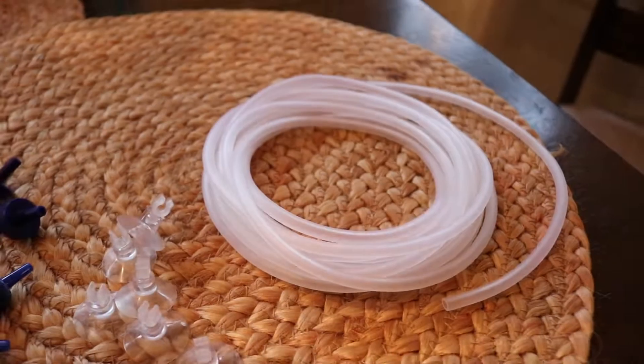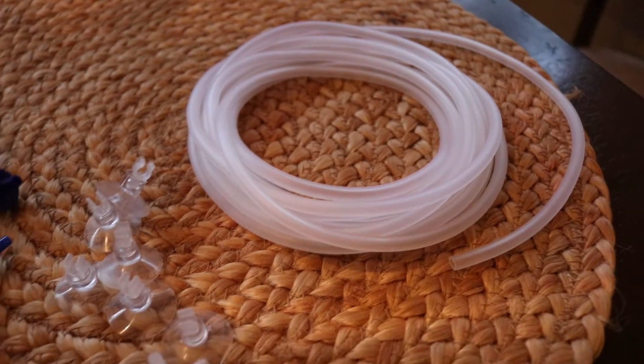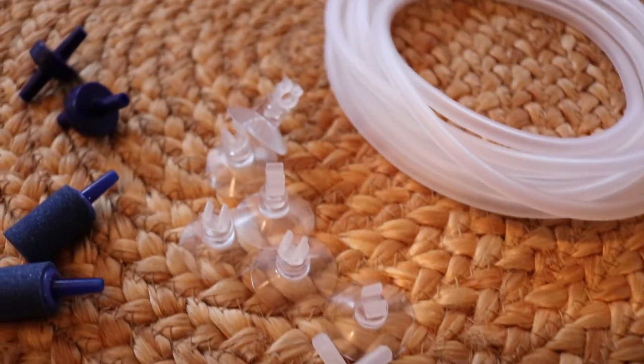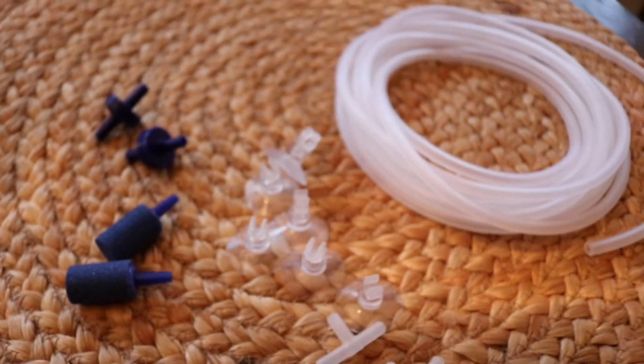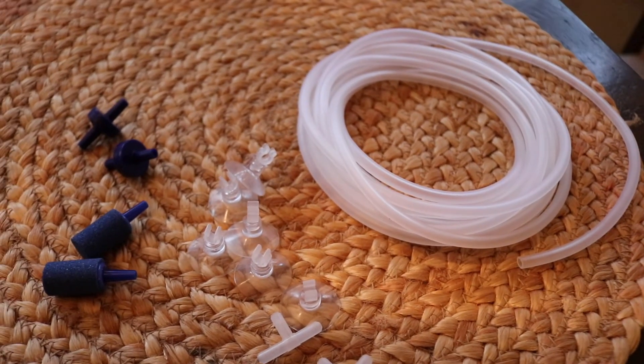So essentially you have the tubing, two T-adapters, six suction cups, two air stones, and the check valves. That's pretty much everything you have in the kit.